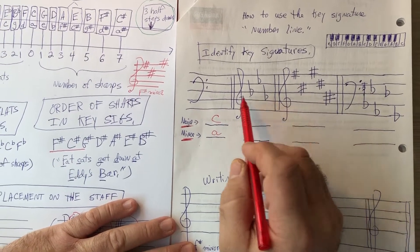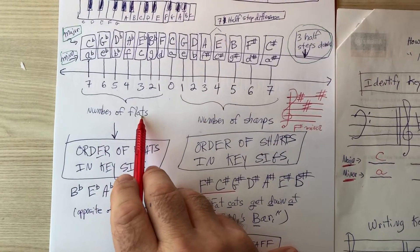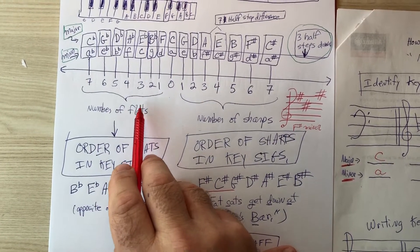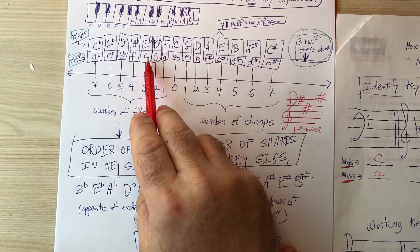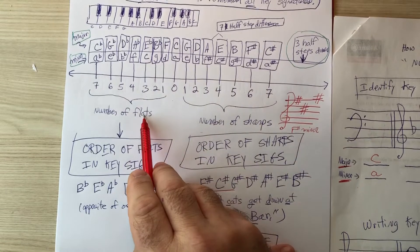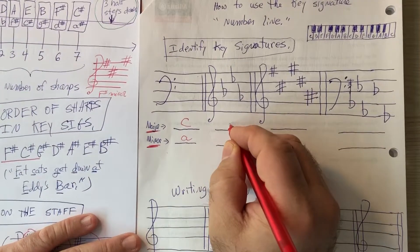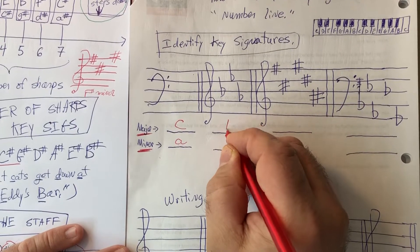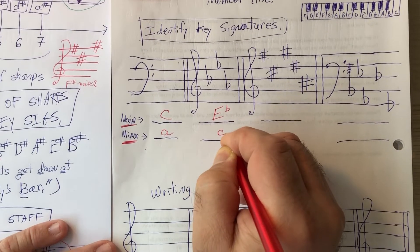We go to the flat side of our number line and we look for the keys that have three flats. There's number three. So we see it's E flat major or C minor have three flats. We come back here putting major at the top in this particular exercise. So E flat major or C minor.